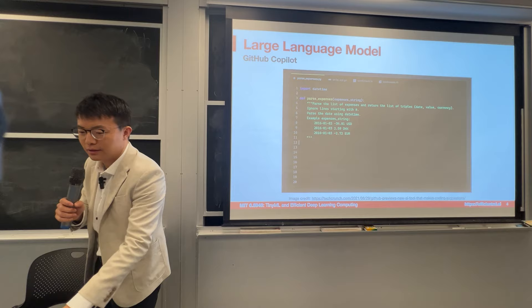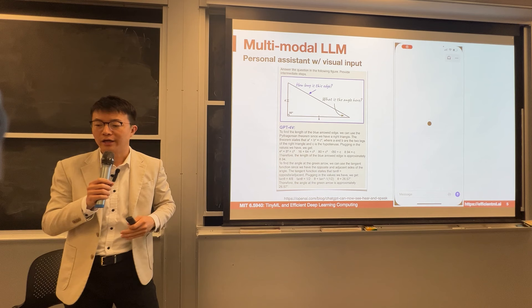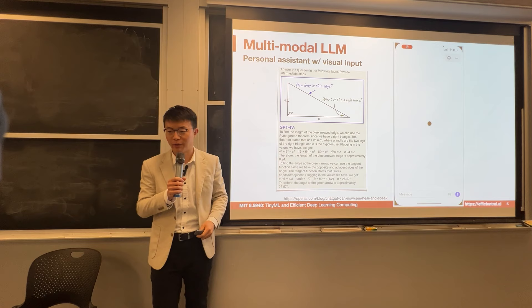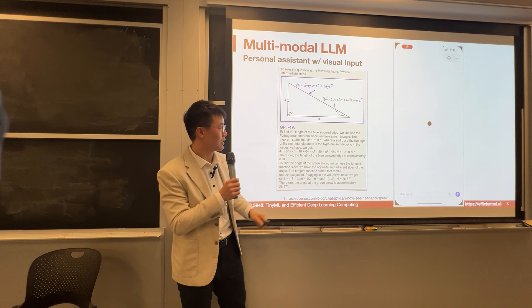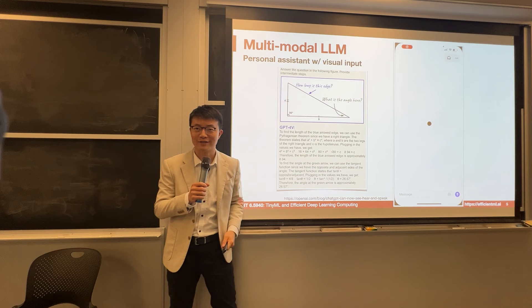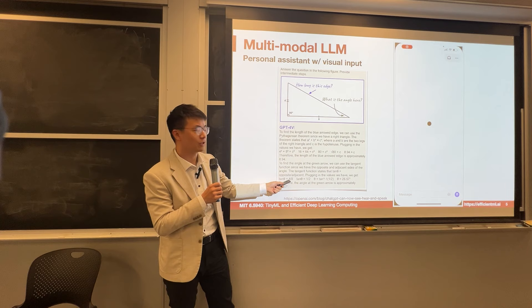Recently, the pretty amazing part is GPT-4, which also includes the vision language model. It can not only process text but also vision inputs. For example, we ask it how long is the edge, what is the angle here. It says the values are 4, 8, 8. Therefore C equals the square root of 16 plus 64, and the angle theta equals arctan(4/8). Very exciting.